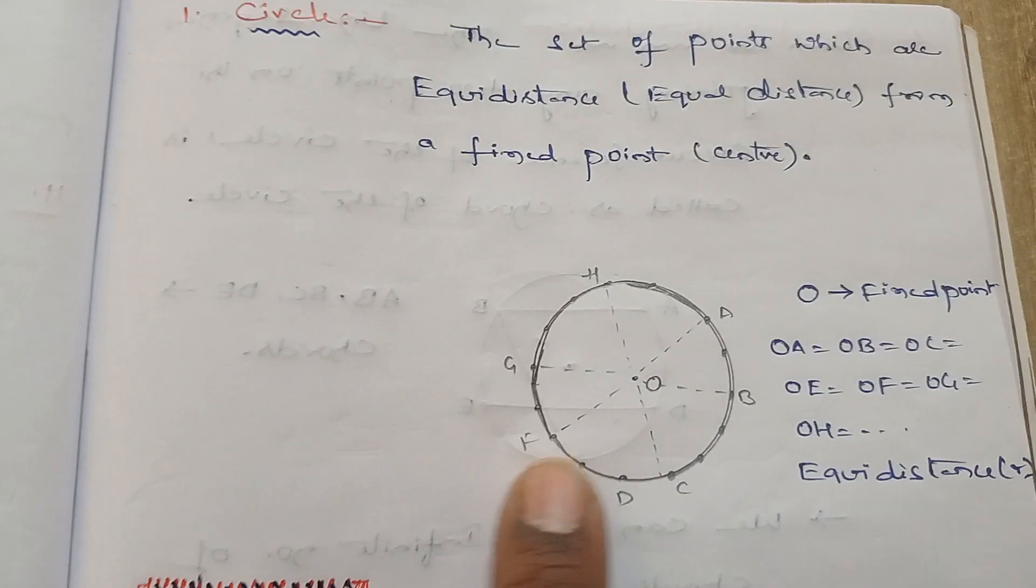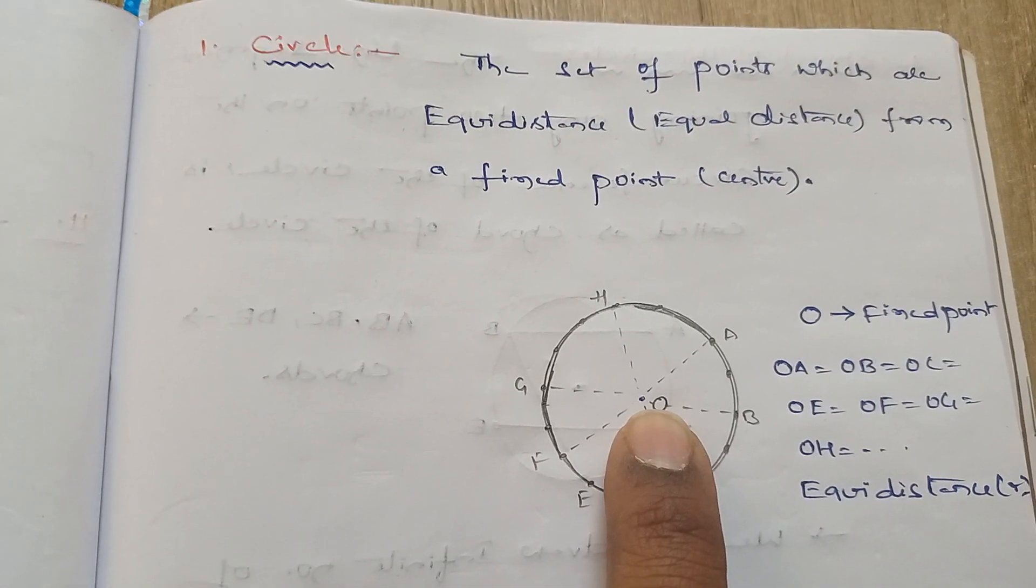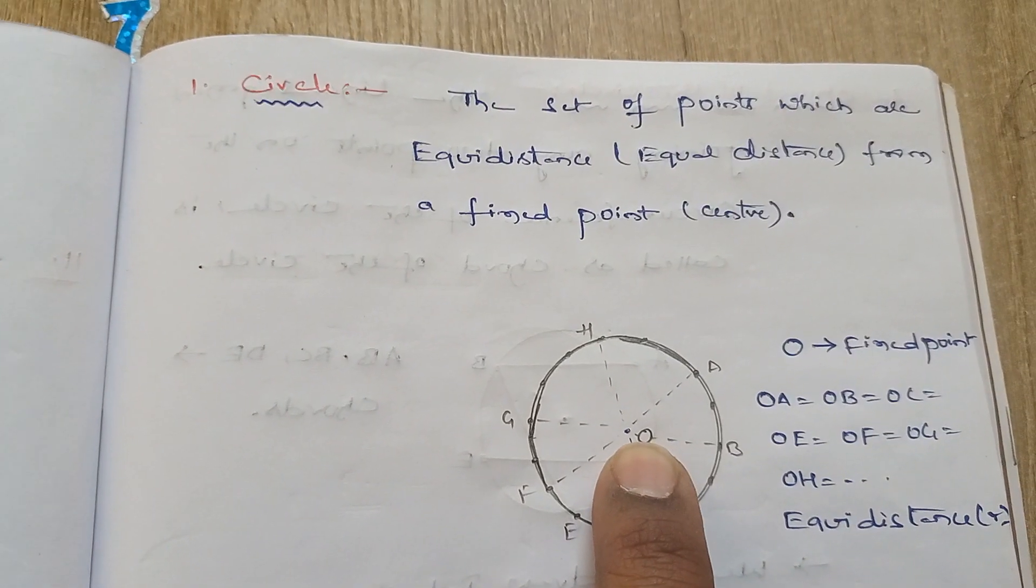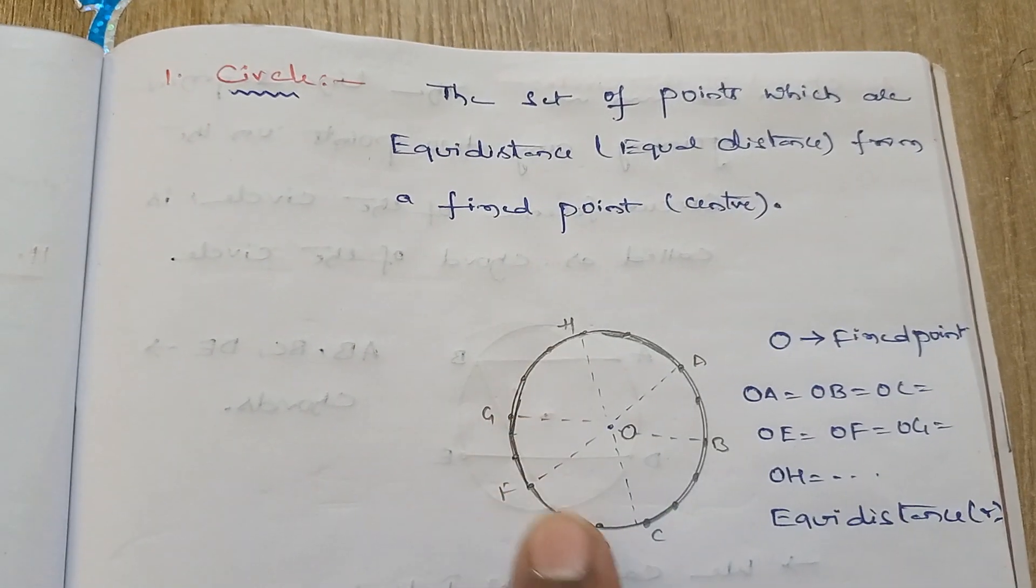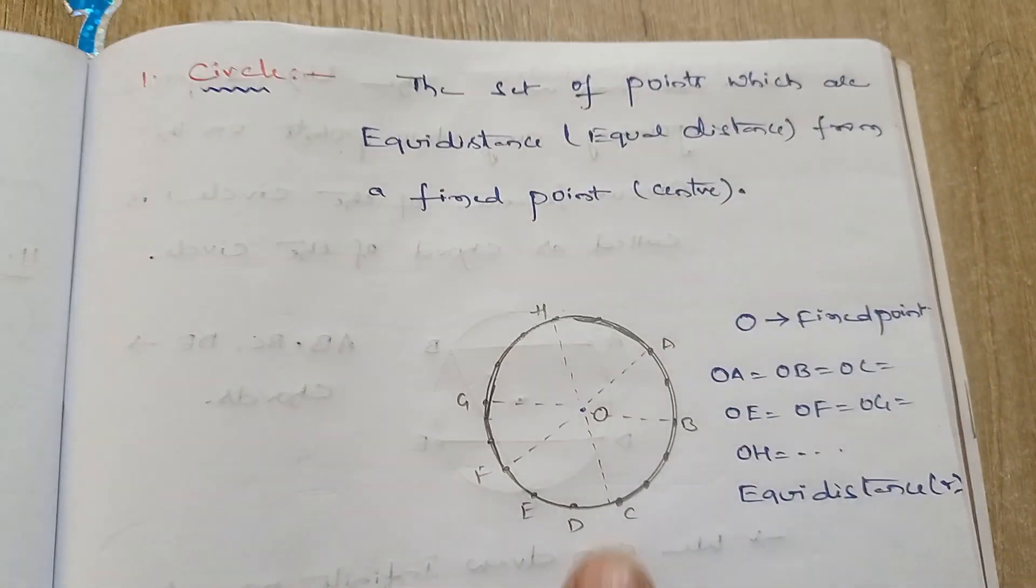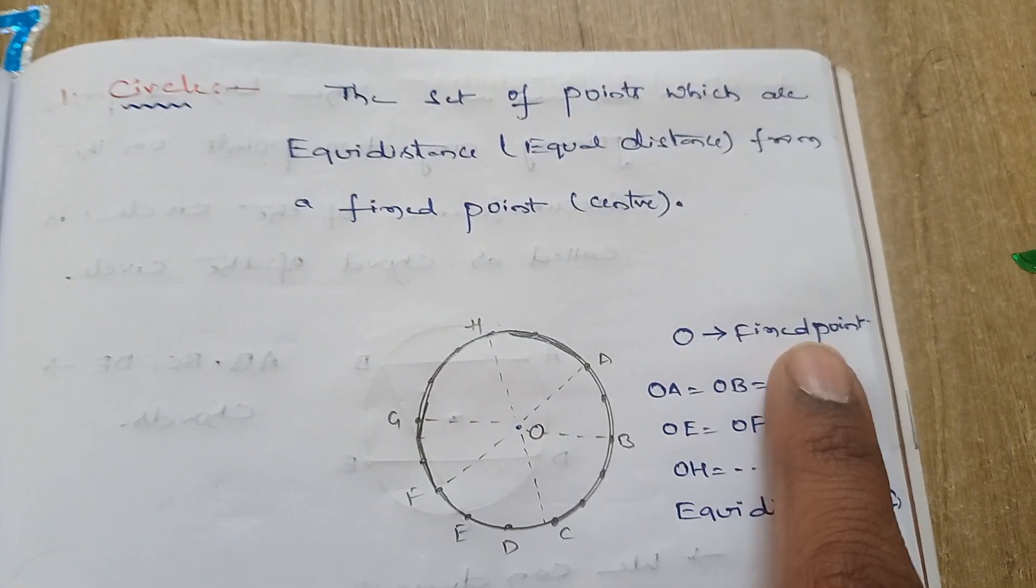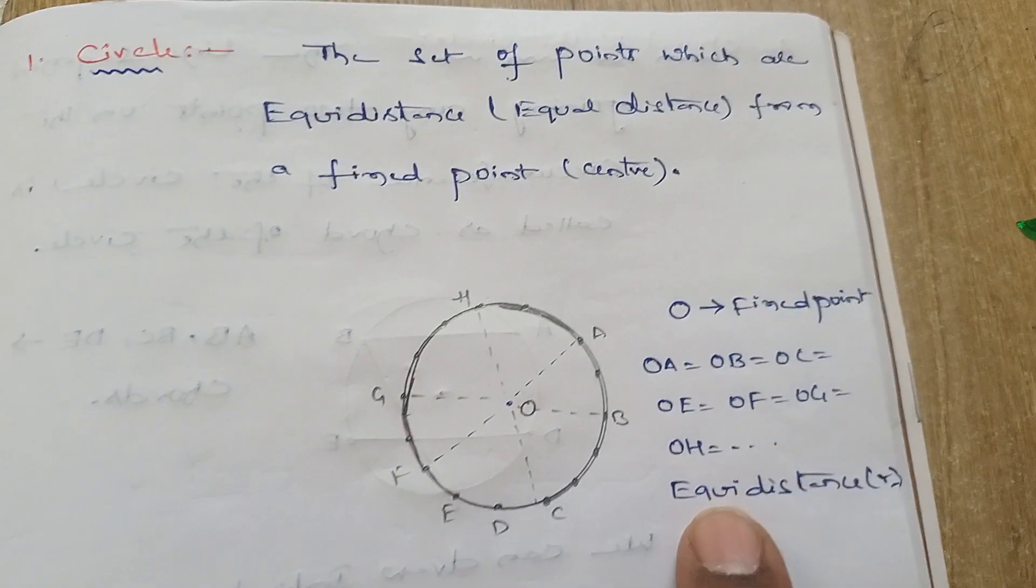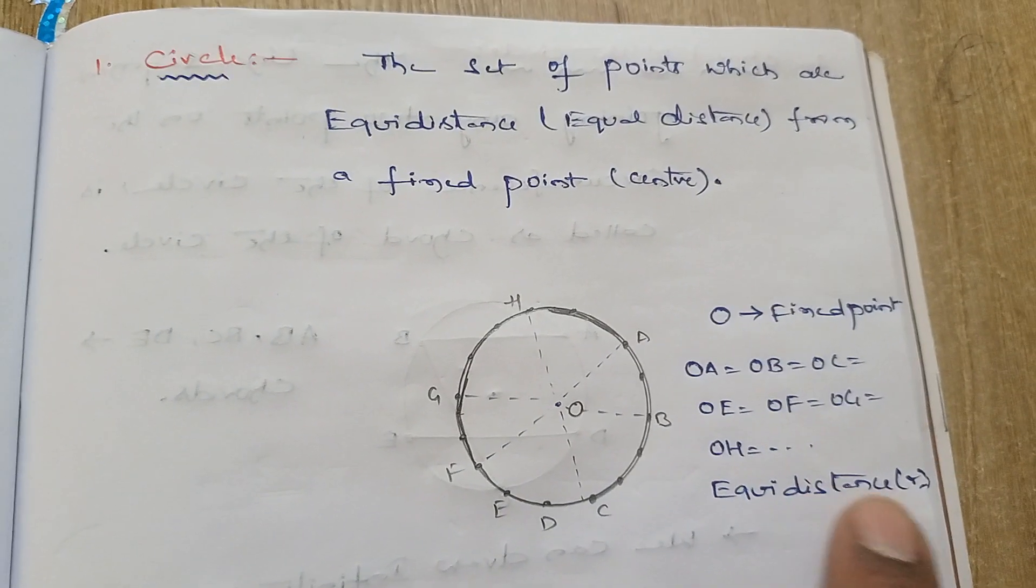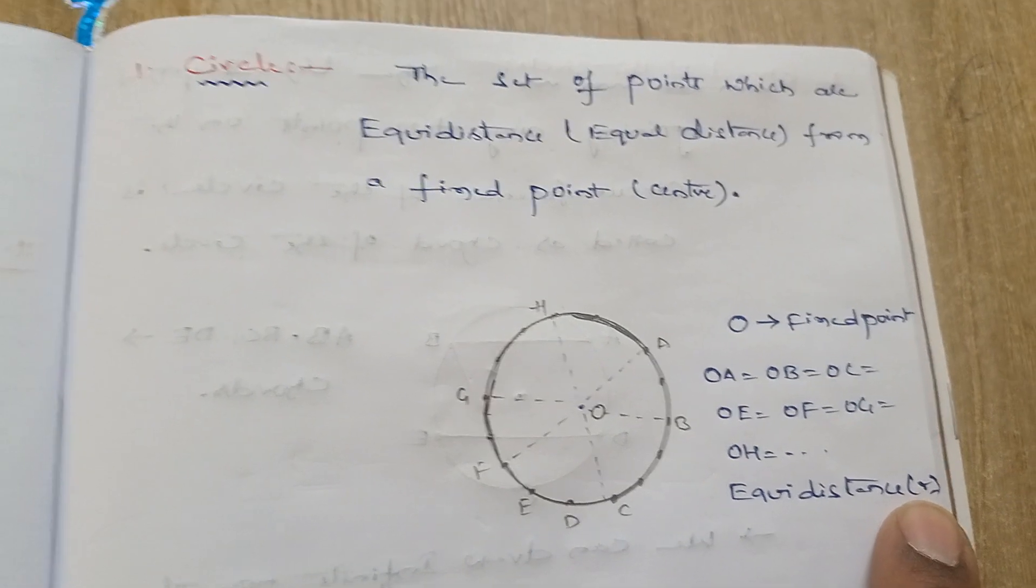Where O is the center, that is a fixed point. From the fixed point to any point on the circumference - OA, OB, OC, OE, OF, and so on - are equal distances. It is denoted by r. It is generally called as radius.